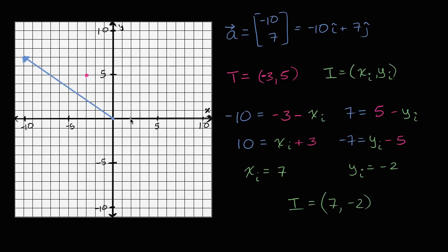Let's see if that makes visual sense. x equals seven, y equals negative two — that's our initial point. Our vector goes from (7, -2) to (-3, 5), which makes a lot of sense — it's just the original vector shifted to the right seven and down two. So now we're pretty well equipped: if we know the initial and terminal points, we can find the components; if we know the terminal point and components, we can find the initial point; and if we know the initial point and components, we can find the terminal point. Knowing two of the three gives us the third.